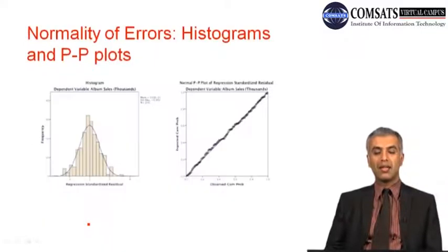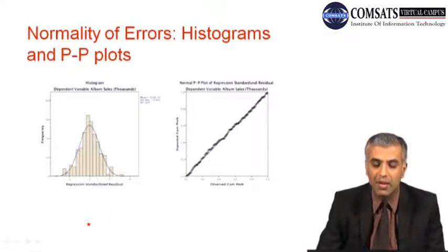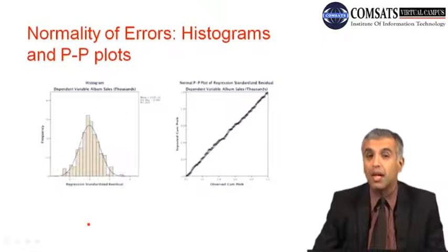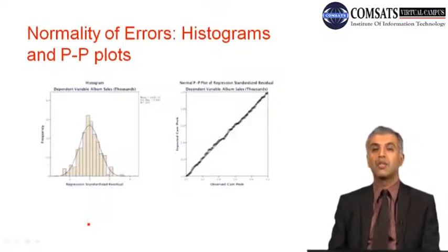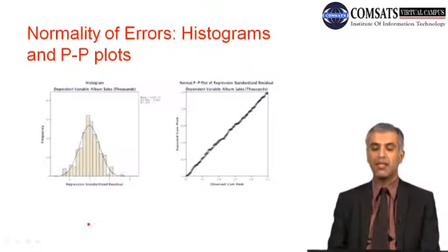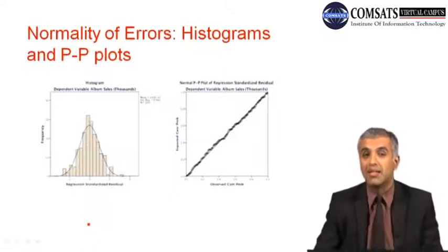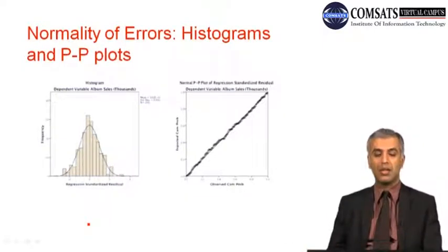We also went on to see how to check for the normality of errors. Histograms and P-P plots are common ways to check for normality of errors. The actual values are mounted on the predicted values, and if these values form a straight line on the predicted value line, the P-P plot shows normality. Similarly, the histogram gives the same information about normality of errors.